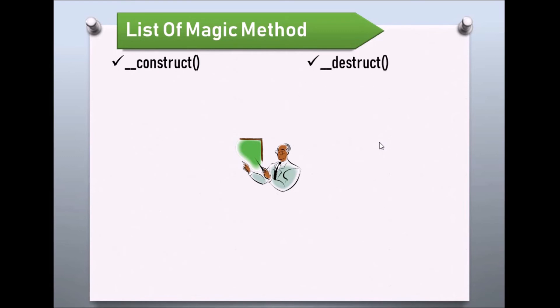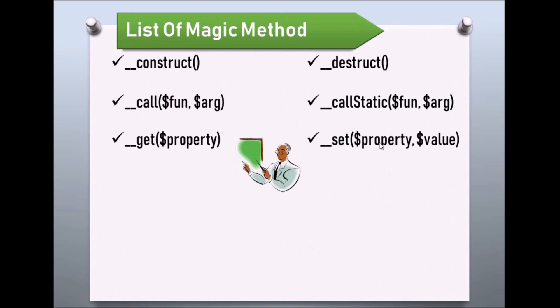PHP provides many magic methods that we will cover in this series. These include: constructor, destructor, call, callStatic, get, set, isset, unset, sleep, wakeup, toString, invoke, clone, and autoload.